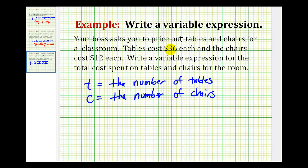Every table costs $36, so $36 times t would be the total cost for the tables. Plus each chair costs $12, that would be $12 times c.